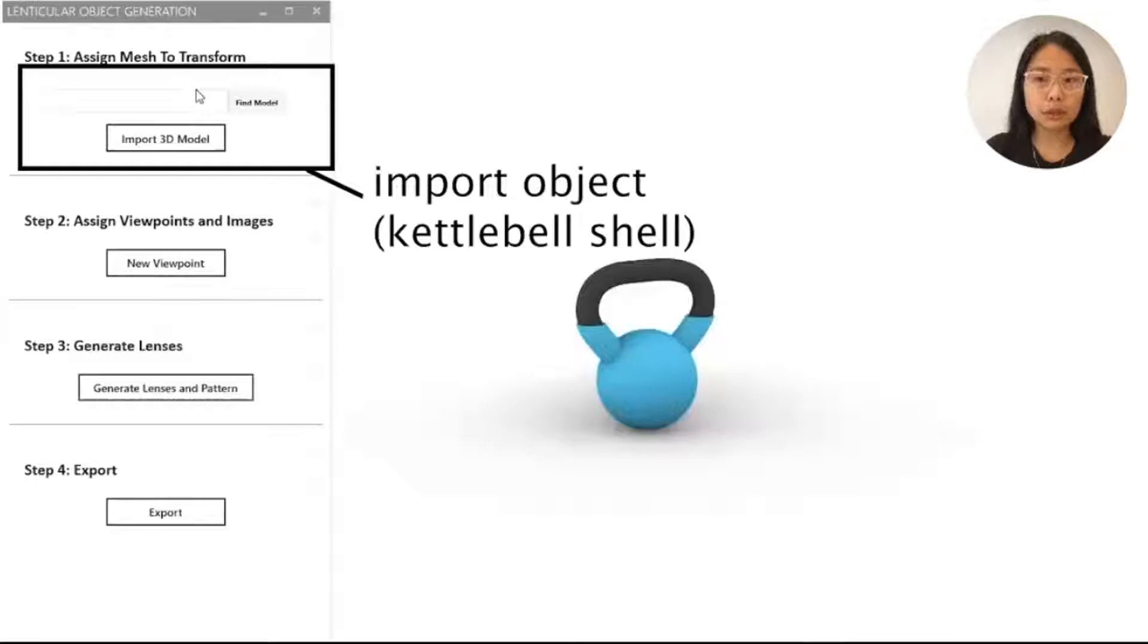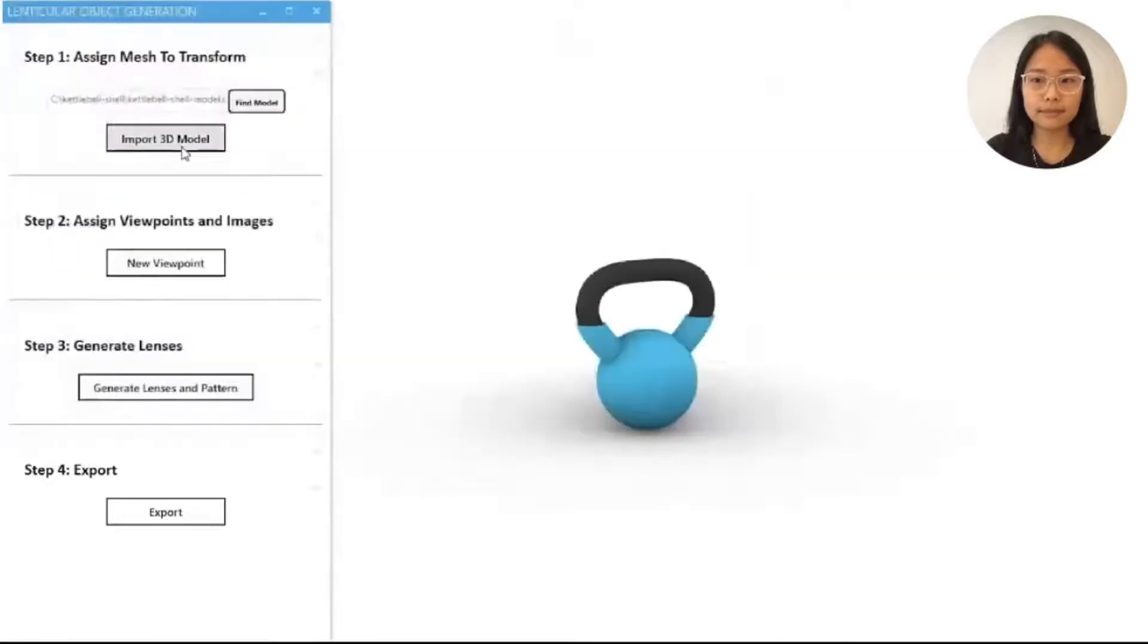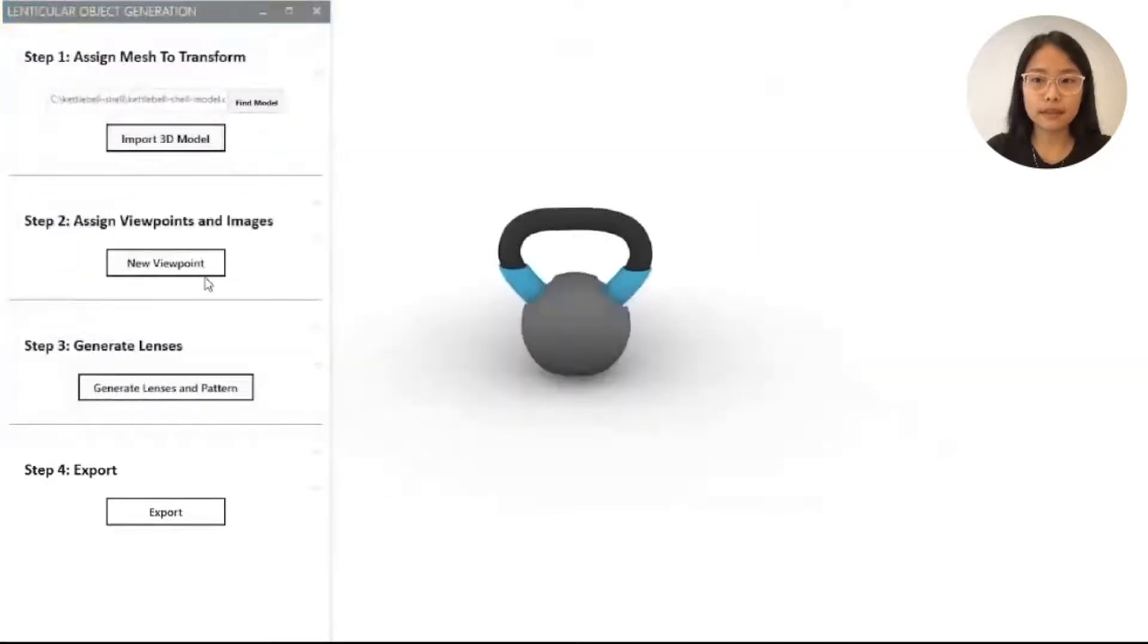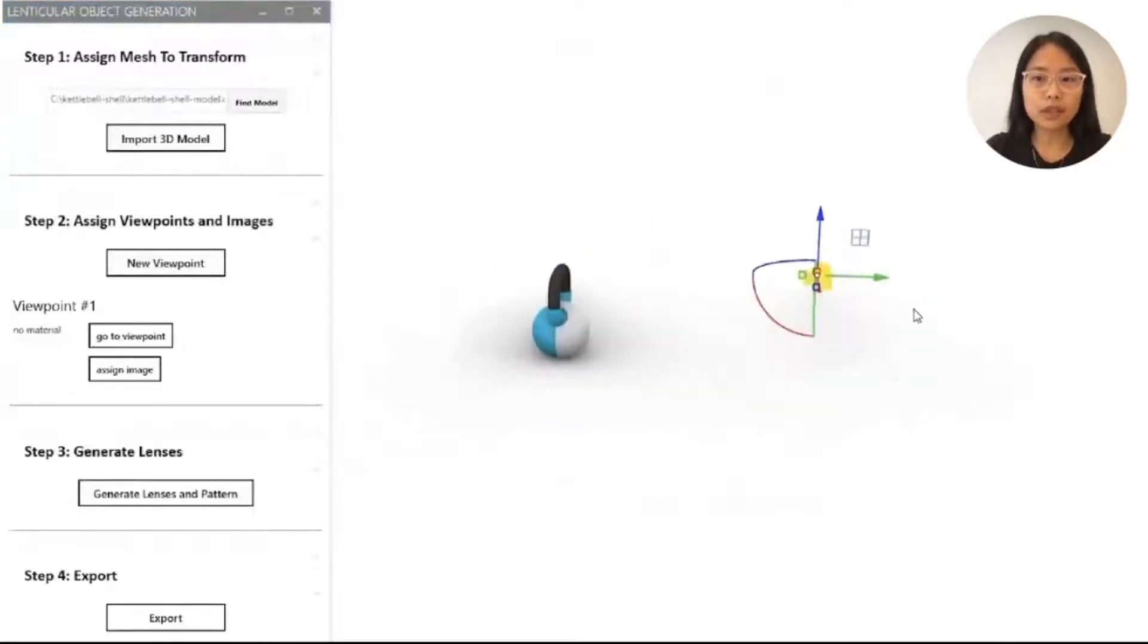To make this kettlebell shell, I first import the shell object from the files. I then set up a viewpoint and move it to the correct location in the viewport on the right.